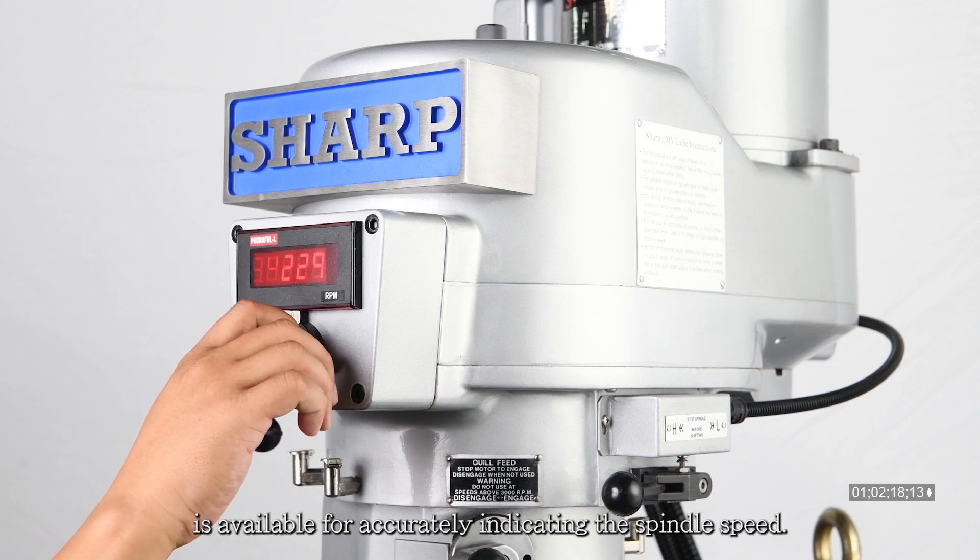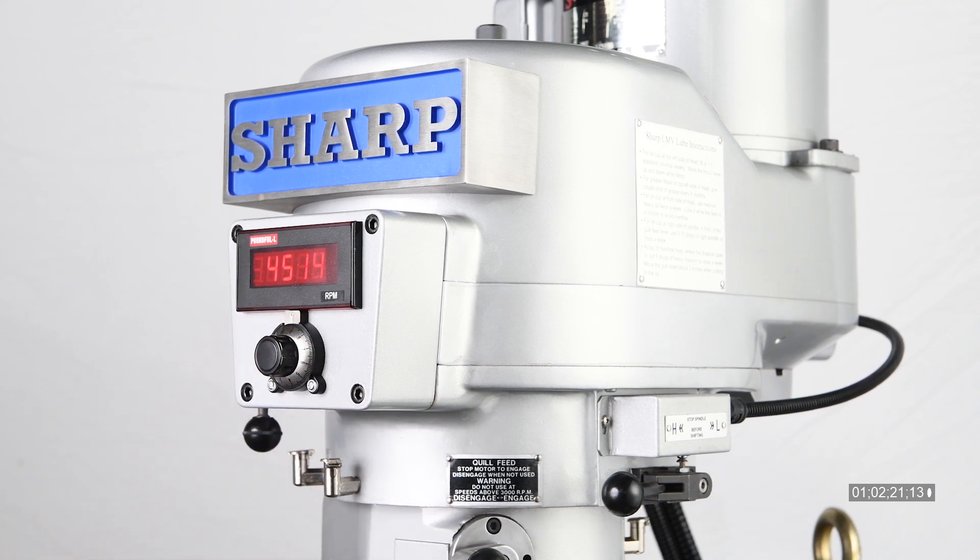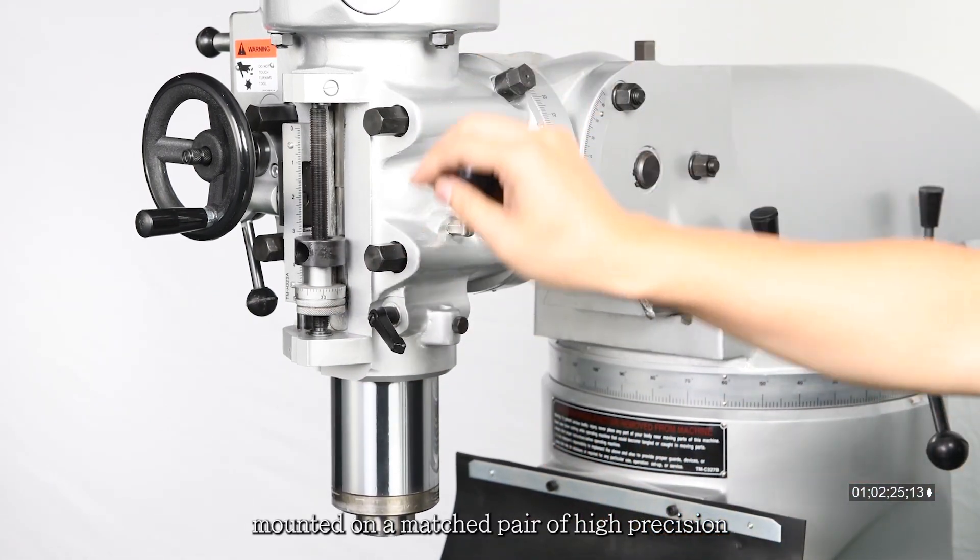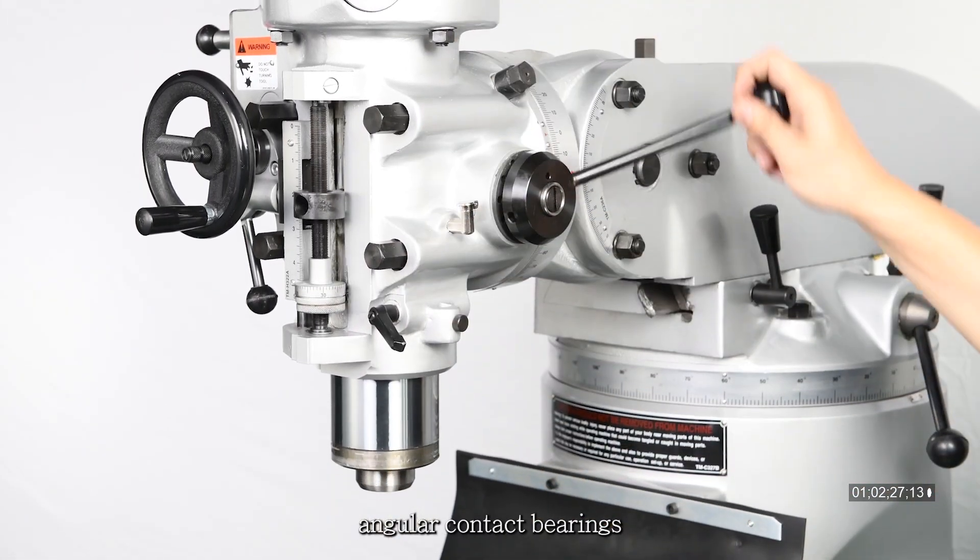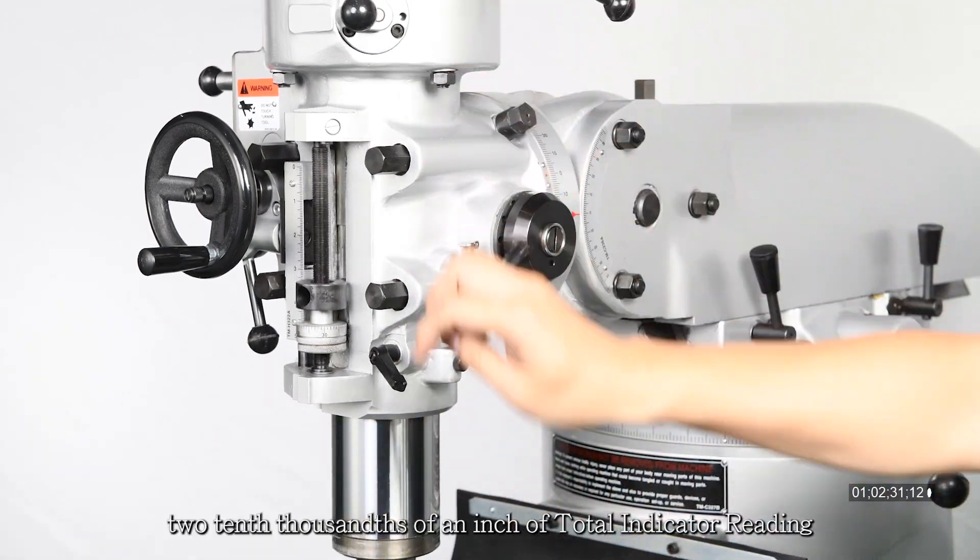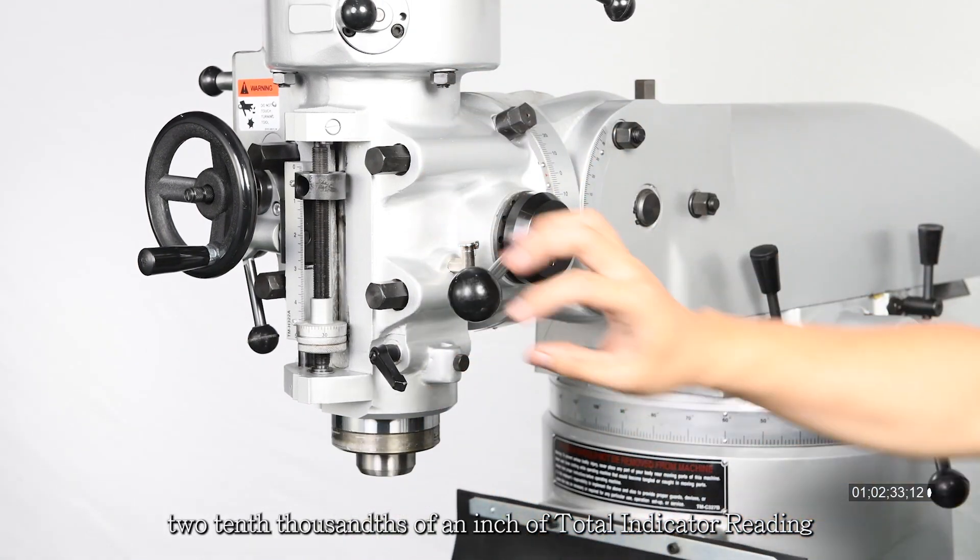The quill is hard chrome plated and mounted on a matched pair of high-precision angular contact bearings. This ensures spindle run-out of no more than 2/10 thousands of an inch of total indicator reading.